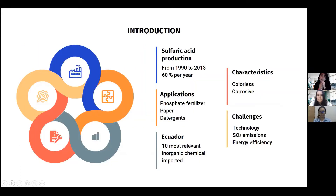Sulfuric acid is one of the most important chemicals in the world. From 1990 to 2013, production rose over 60% per year. It has a range of applications like phosphate fertilizers, papers, and detergents. In Ecuador, our country, in 2010, it is considered among the 10 most relevant inorganic chemical imports and the 10th activity that causes more damage to the environment. For that reason, it is important to achieve challenges like reducing sulfur dioxide emissions and improving energy efficiency.